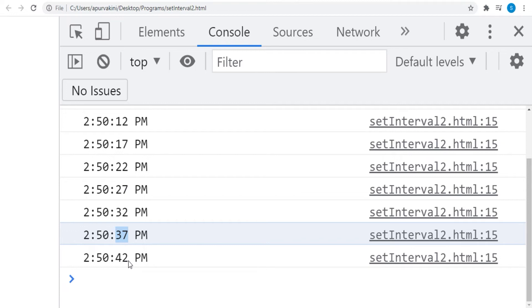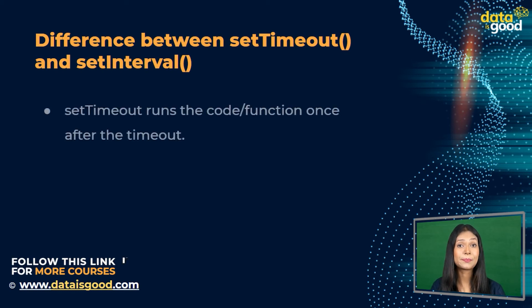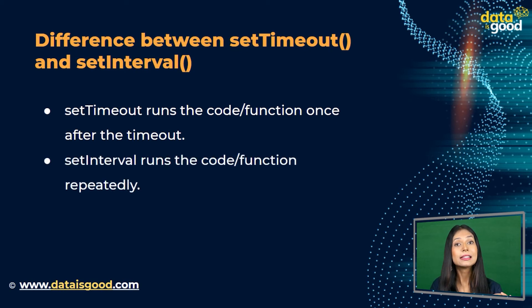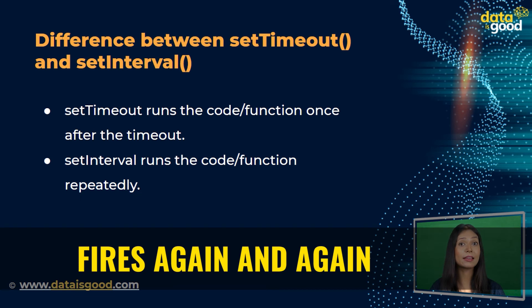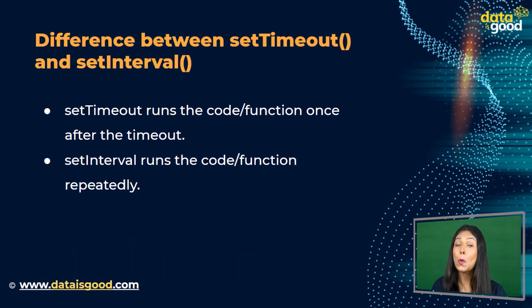As mentioned, setTimeout and setInterval are similar concepts, but there is a key difference. setTimeout runs the code or function once after the timeout. setInterval runs the code or function repeatedly, with the length of the timeout between each repeat. In simple words, setInterval fires again and again in intervals, while setTimeout only fires once.